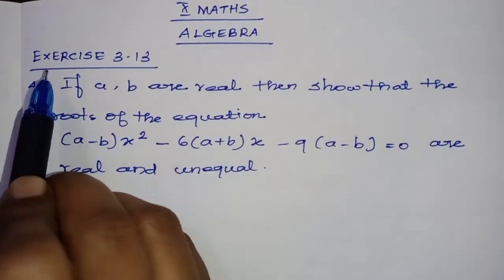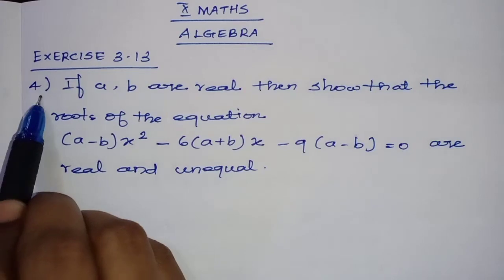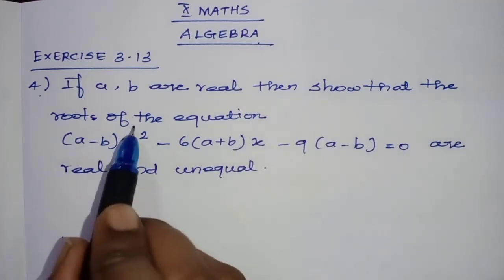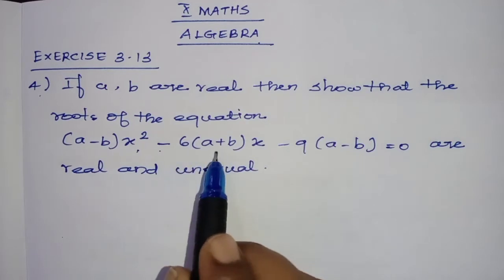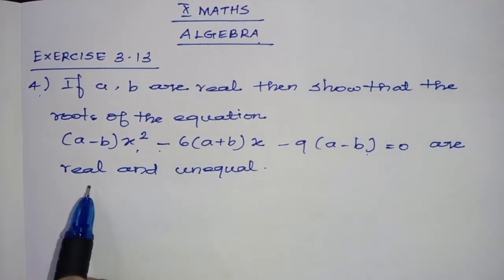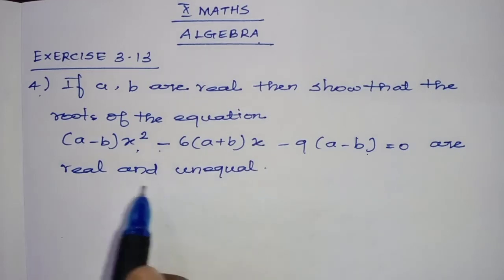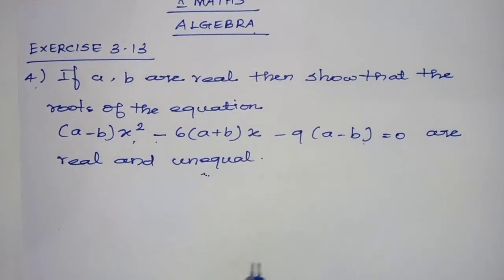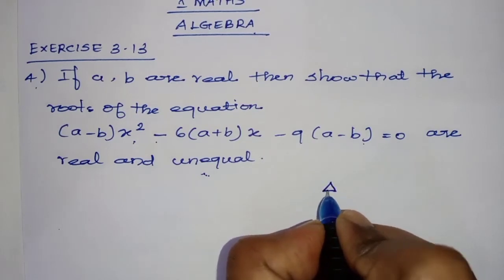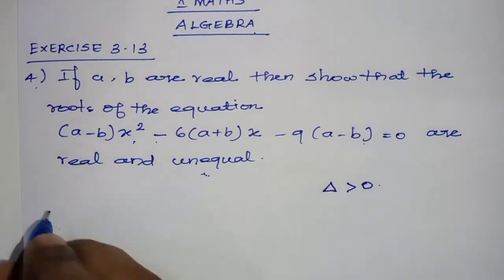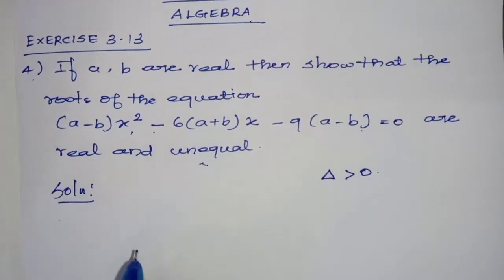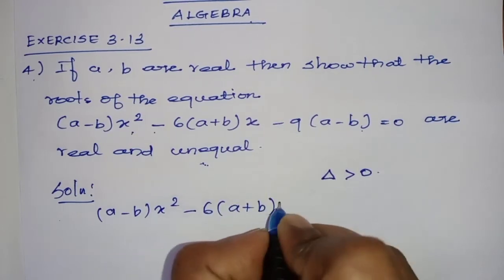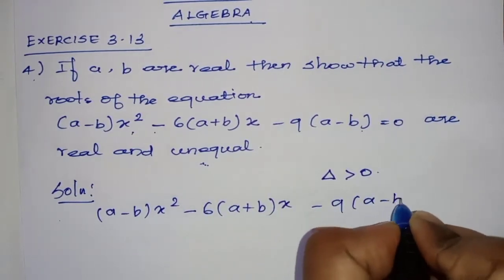Hi students, welcome to Benimax. In this video I am going to teach Exercise 3.13, fourth sum from 10th standard chapter Algebra. If a, b are real, then show that the roots of the equation (a minus b) x squared minus 6(a plus b)x minus 9(a minus b) equal to 0 are real and unequal. We can write the given equation: (a minus b) x squared minus 6(a plus b)x minus 9(a minus b) = 0.